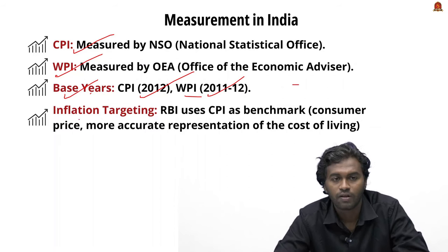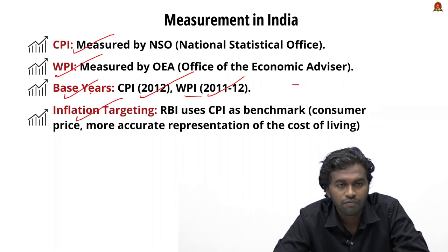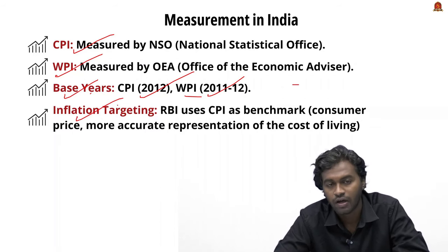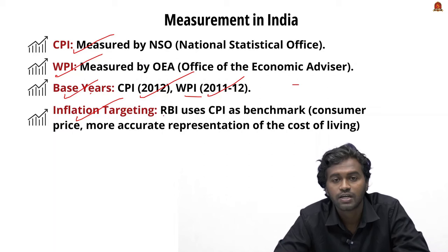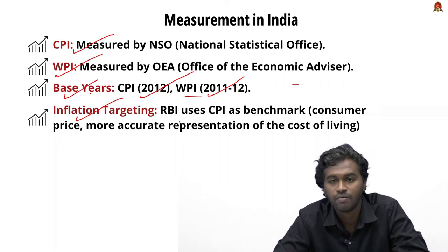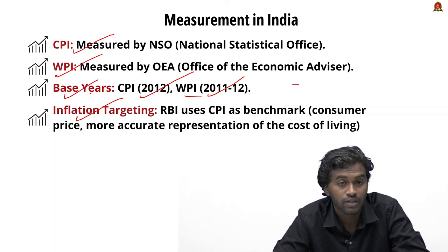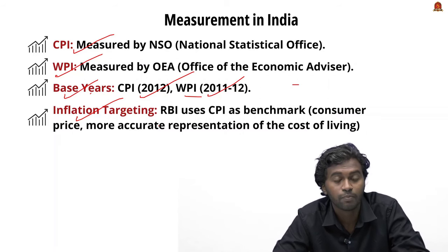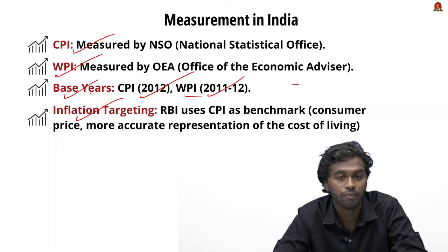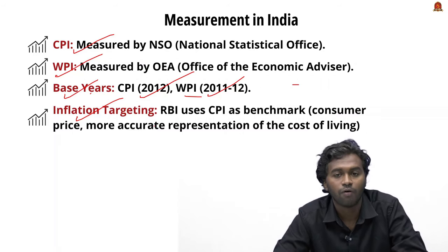When it comes to inflation targeting, the RBI uses the Consumer Price Index as its benchmark because it reflects the retail prices paid by consumers. Therefore, the CPI gives a more accurate representation of how inflation is impacting the cost of living.